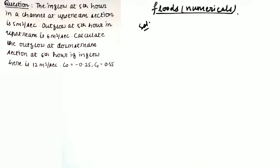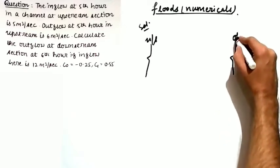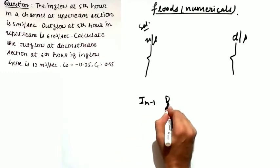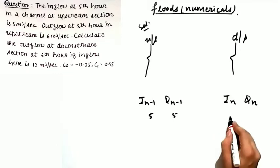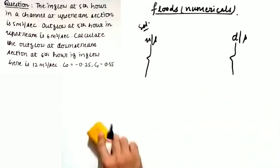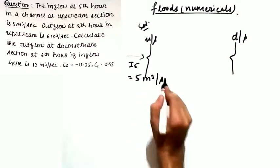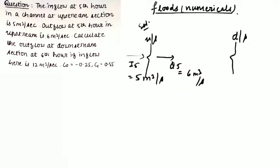The inflow at the 5th hour at upstream is given as 5 m³/s and the outflow at the 5th hour at upstream is given as 6 m³/s. Let us draw the diagram: this is the upstream section and this is the downstream section. The data at the 5th hour corresponds to I(n-1) and Q(n-1), and the 6th hour data is I(n) and Q(n) as per Muskingum's equation. So I5 = 5 m³/s and Q5 = 6 m³/s, and we need to calculate the outflow Q6 at the downstream section.